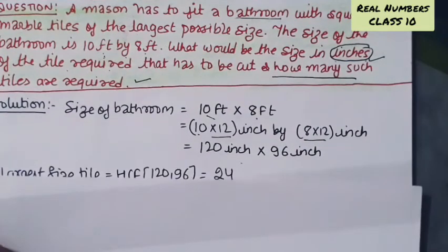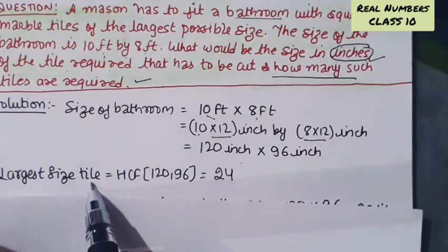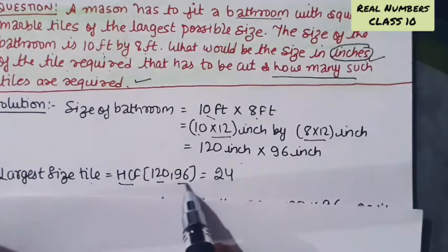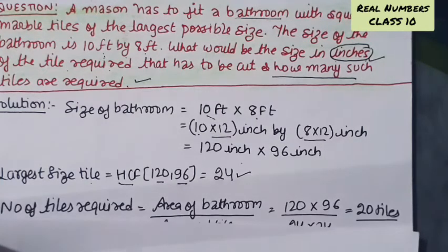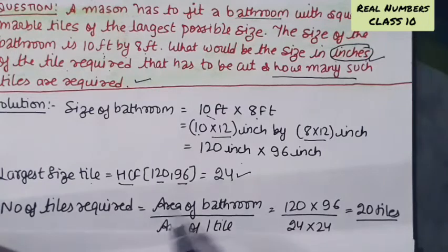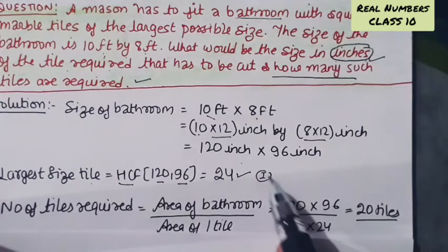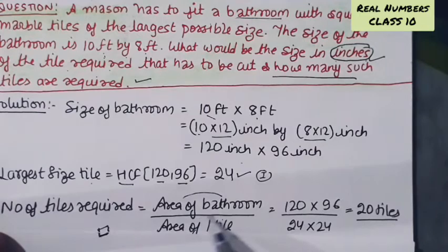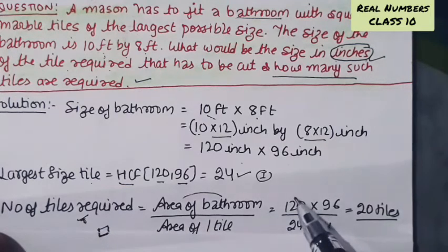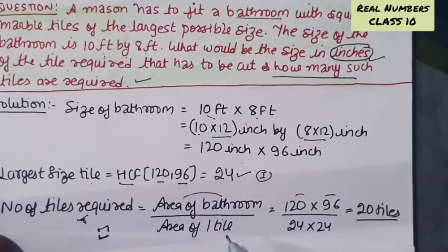Now you have to find the number of tiles, which will be the bathroom area upon the area of one tile. The area of the bathroom is 120 into 96.